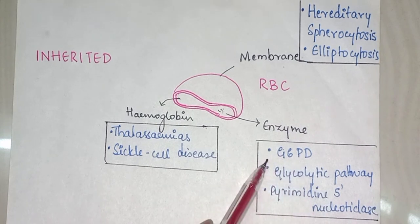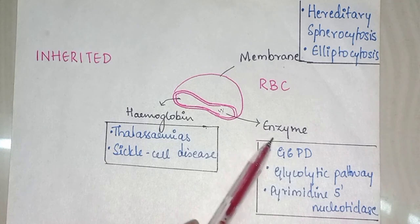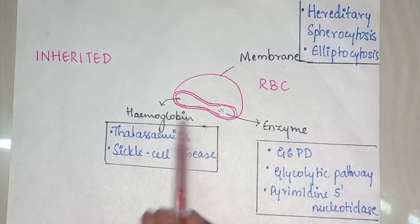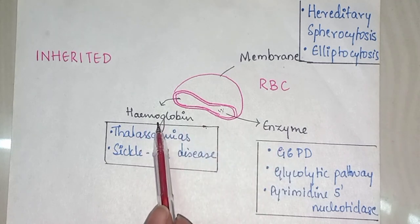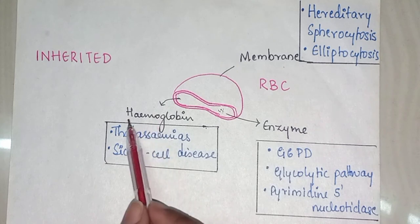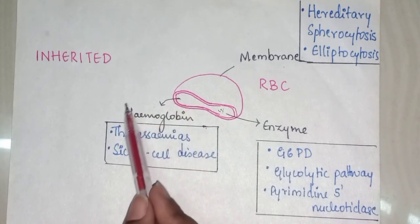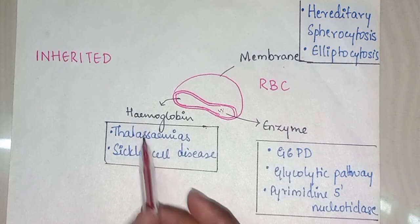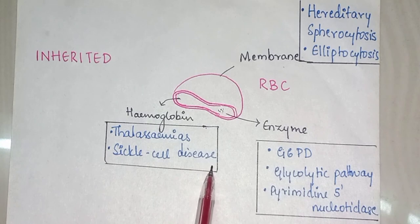Another type of inherited hemolytic anemia is due to any disturbance or abnormality of the hemoglobin — the first ones being thalassemias and sickle cell disease.